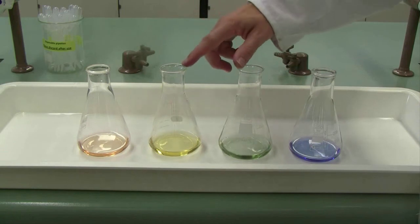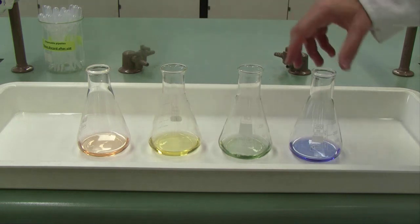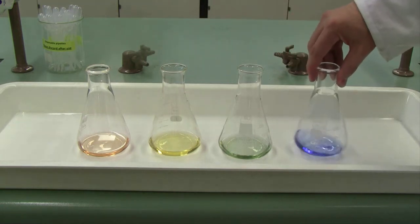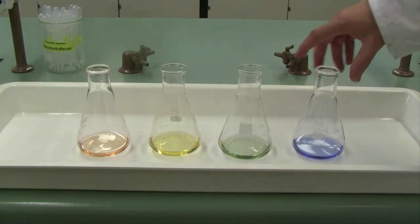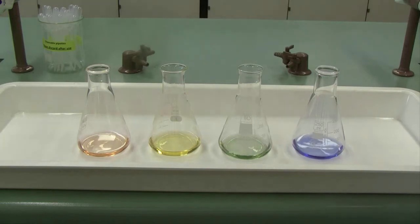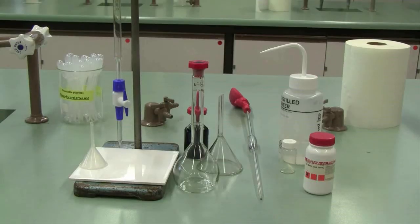And if you're titrating properly, it should be half a drop that makes you go from the yellow to the green. If you just miss the endpoint or if you go way over, you'll end up with this blue color here. So the green is the ideal. Or if you go just half a drop over and end up with blue, that will be okay.